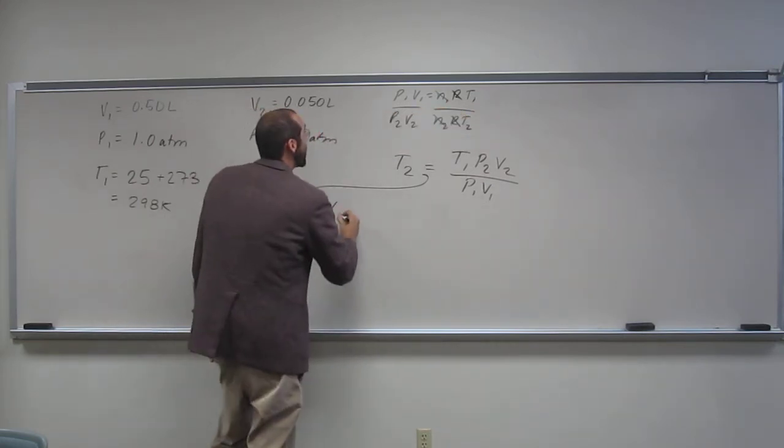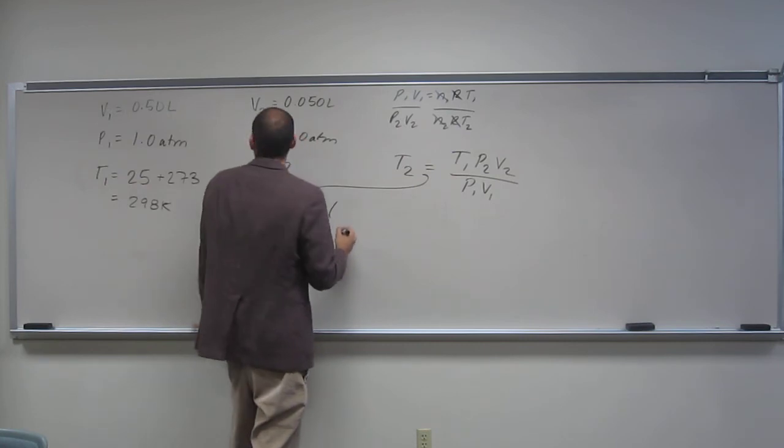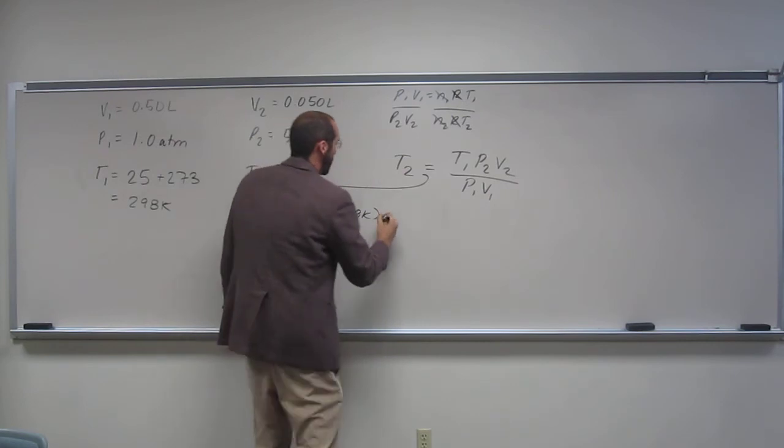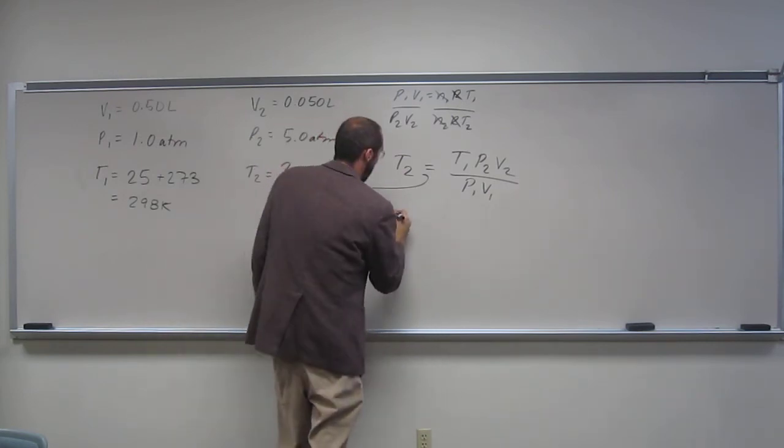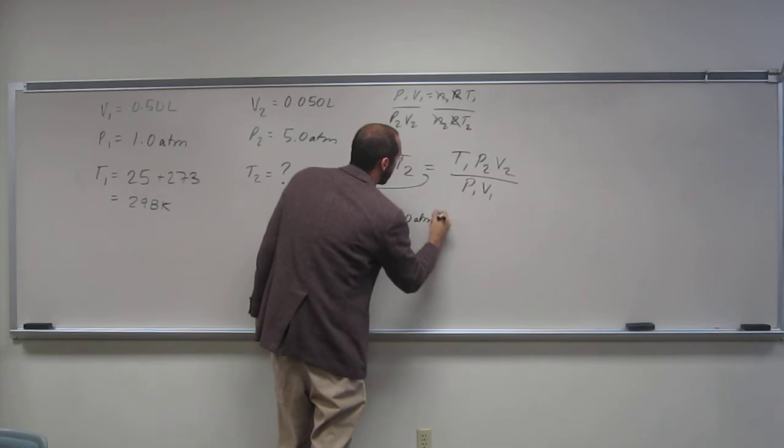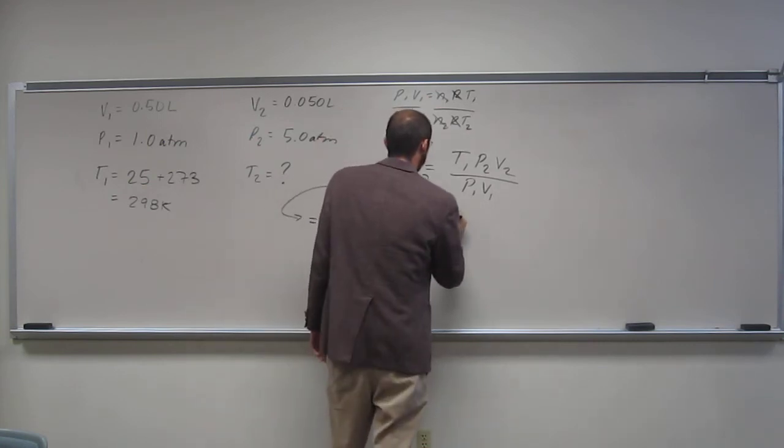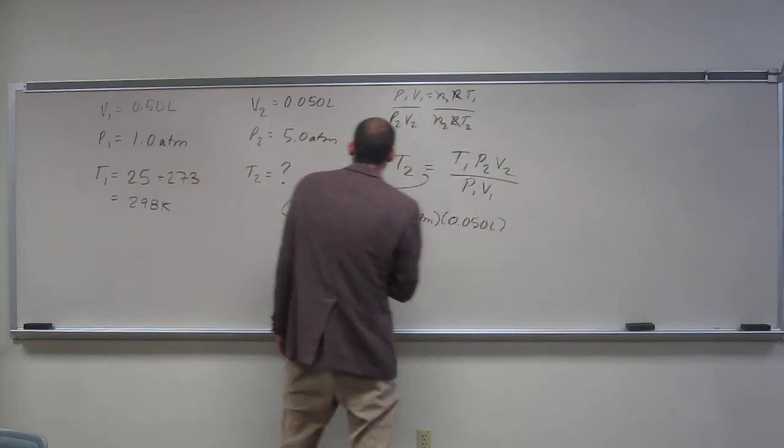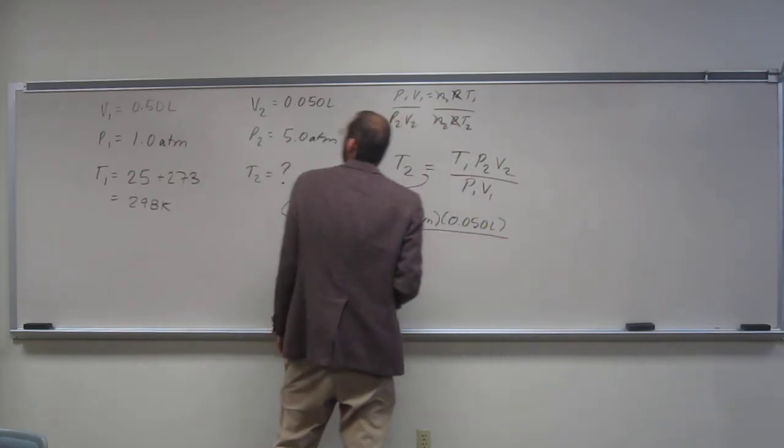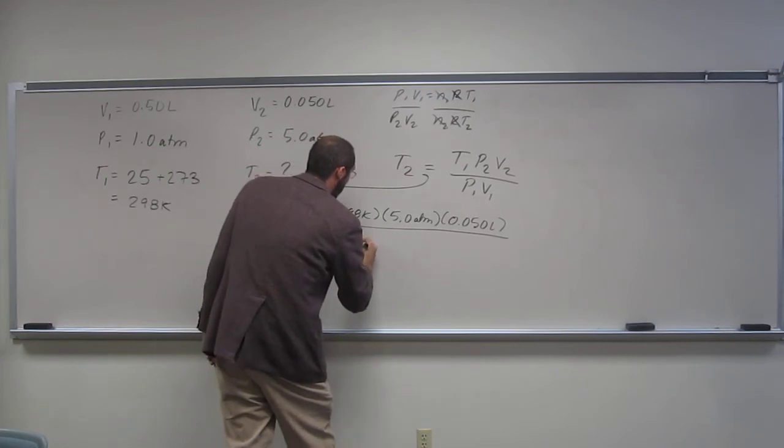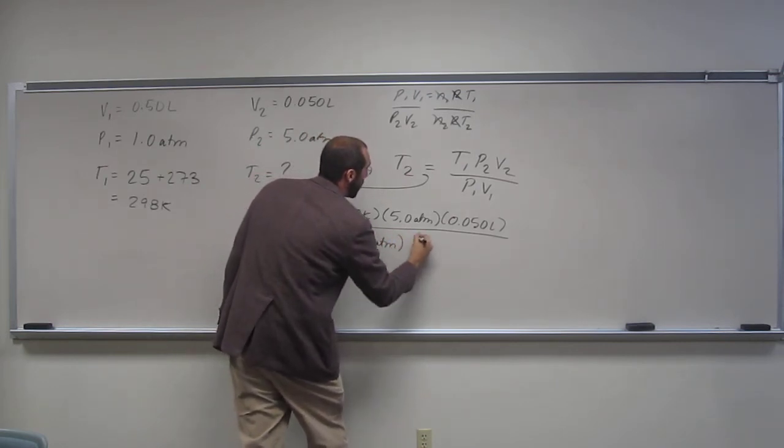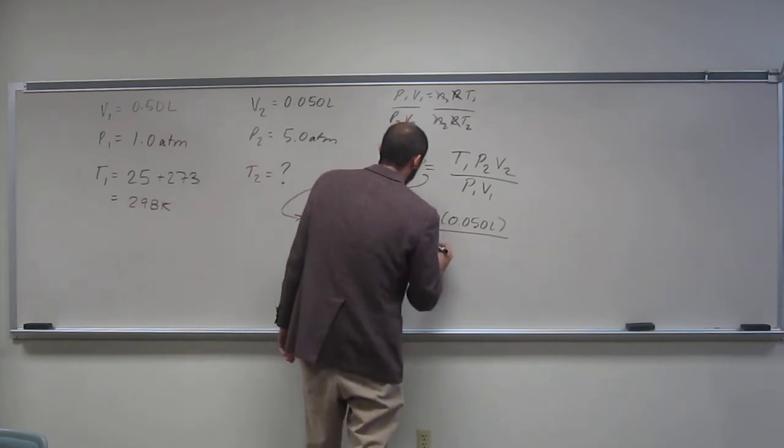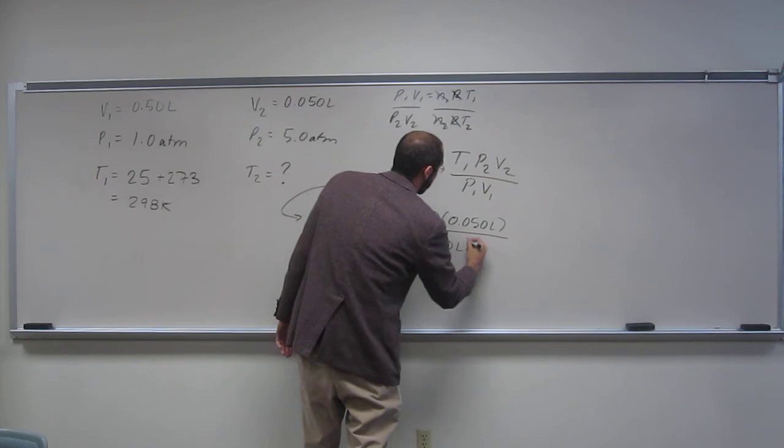Okay, so T1, 298 Kelvin, P2, 5.0 ATM. V2, 0.050 liters, divided by P1, 1.0 ATM, V1, which is 0.50 liters.